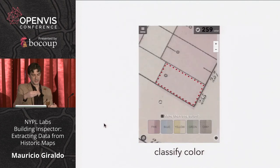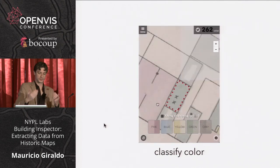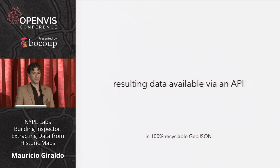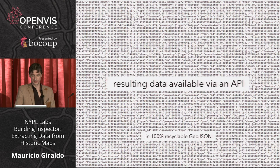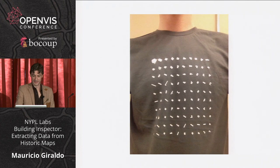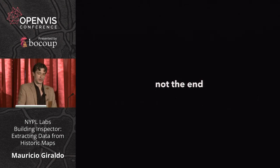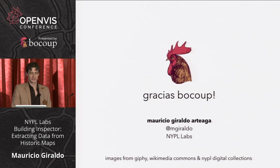The resulting data is available via an API — it's just GeoJSON that you can copy and paste and do whatever you want with it. Hopefully lots of interesting research — like producing cool t-shirts. This is not the end. The idea would be, as John mentioned earlier, to extend these tasks for people to do in the subway, and there are many more data points we need to extract. But this is just a continuation of the story. Gracias.